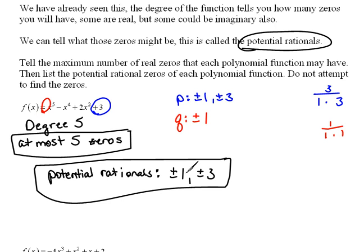Now what they would do at this point is they would take those and they would start trying them. Is a positive 1 a zero of that function? And if not, they would try the negative 1, and so on and so forth until they found them. Now we are not going to attempt to find them. This lesson is just designed to help you figure out the potential rationals, the possibilities.